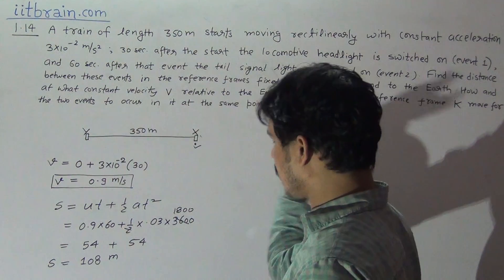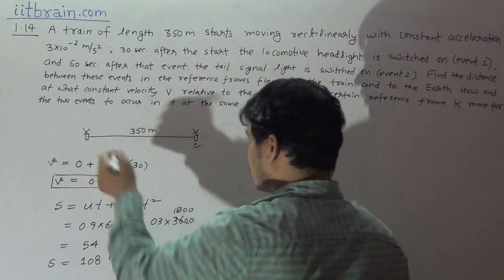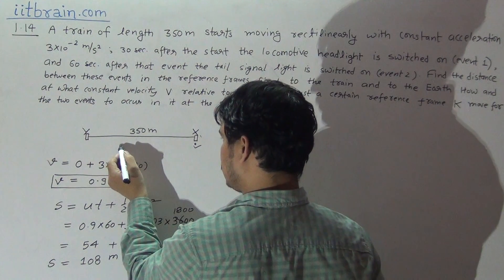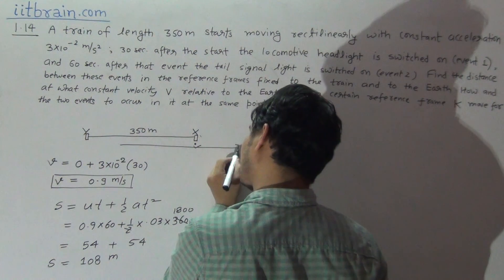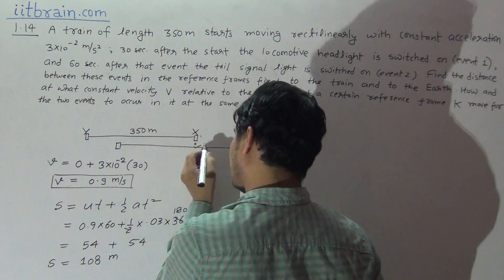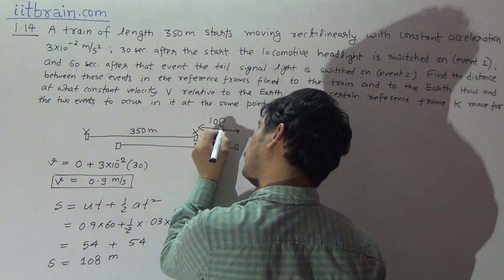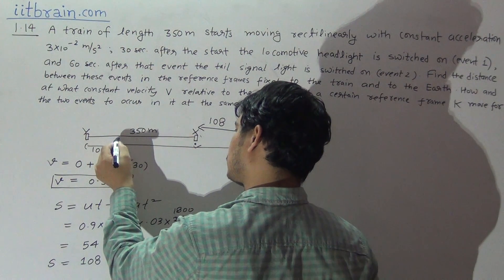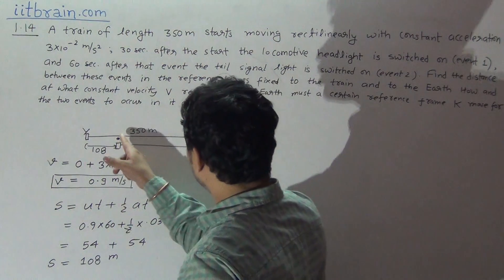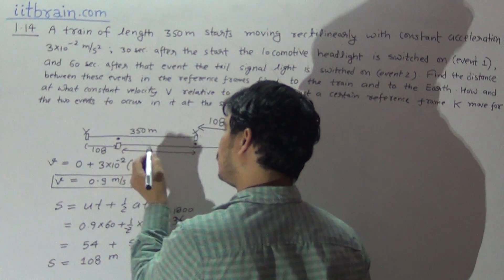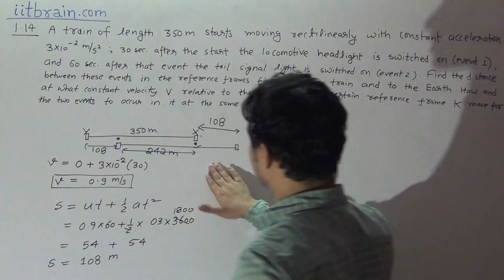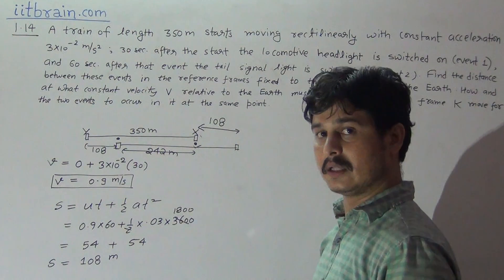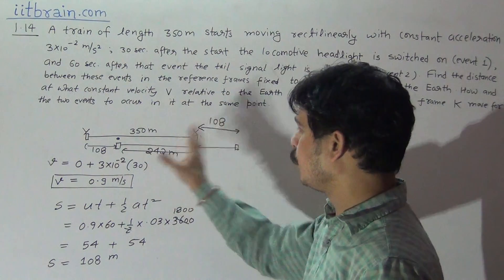So the train covers 108 meters between the two events. Event 1 occurs at the headlight position, and after the train advances 108 meters, the new position places the tail signal where the headlight was. The distance between the two events as seen from the ground is 350 minus 108 = 242 meters. For an observer on the earth, the distance between Event 1 and Event 2 is 242 meters.